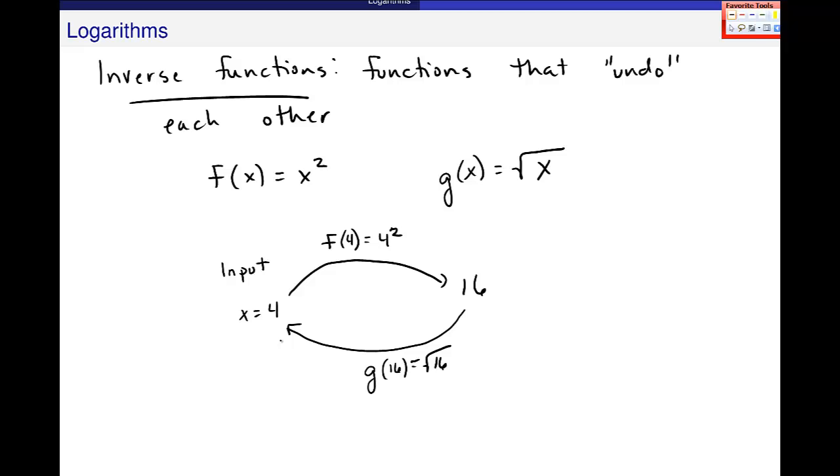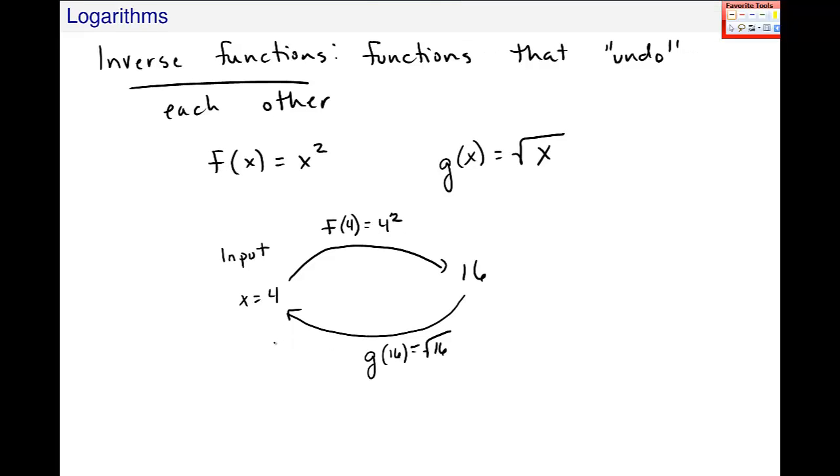So there are functions that kind of go in this circular pattern. This circular pattern holds, in this particular case, for all non-negative numbers. This is what we say in this case - x squared and the square root of x are inverse functions, functions that undo each other.